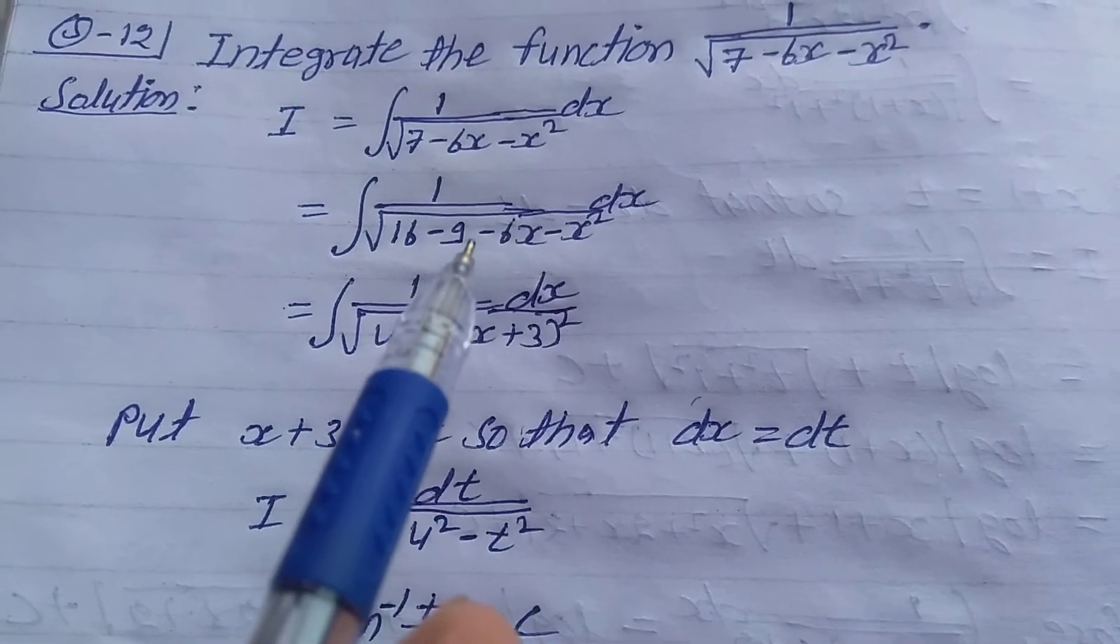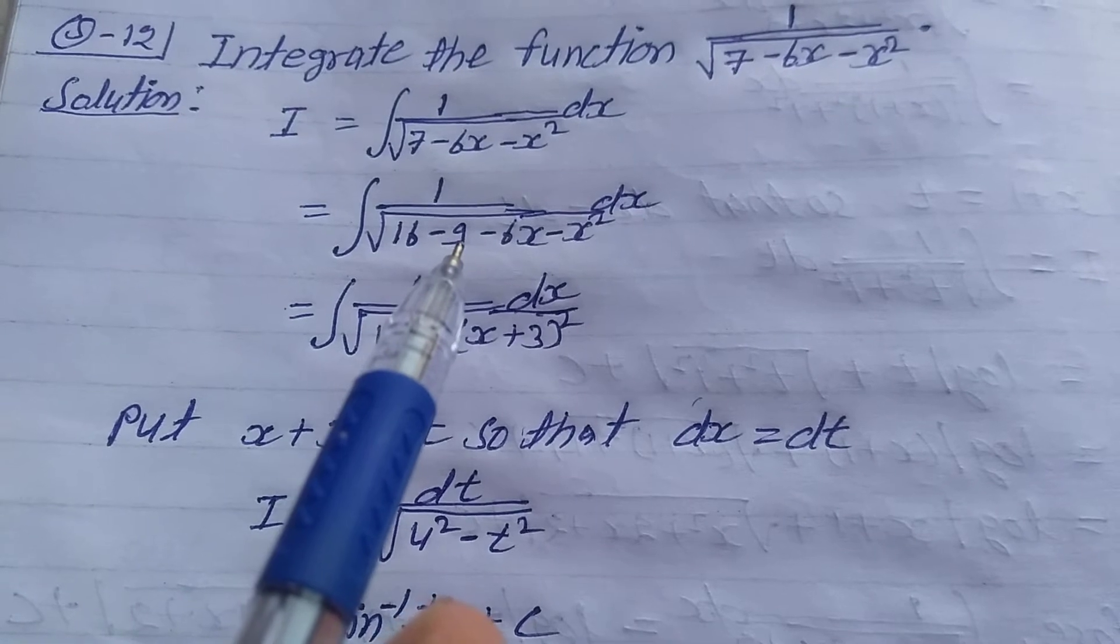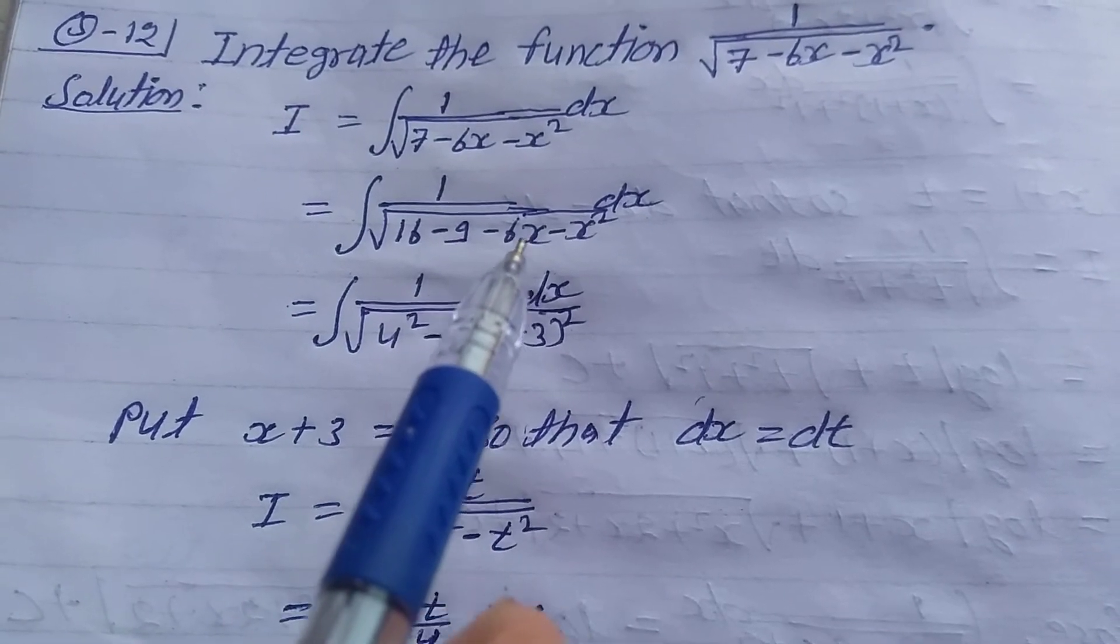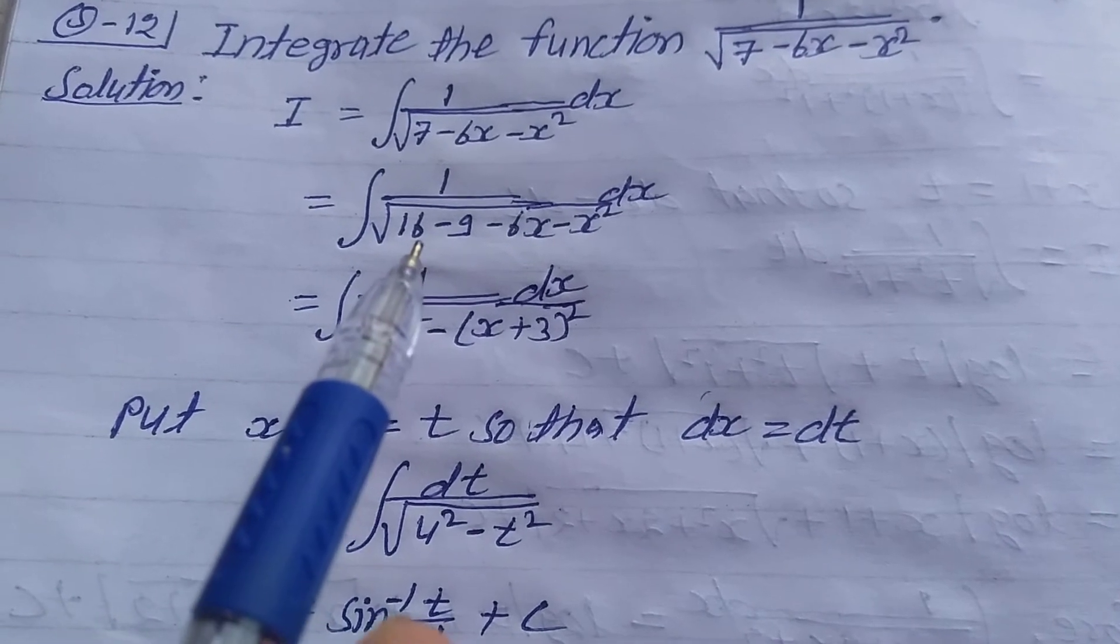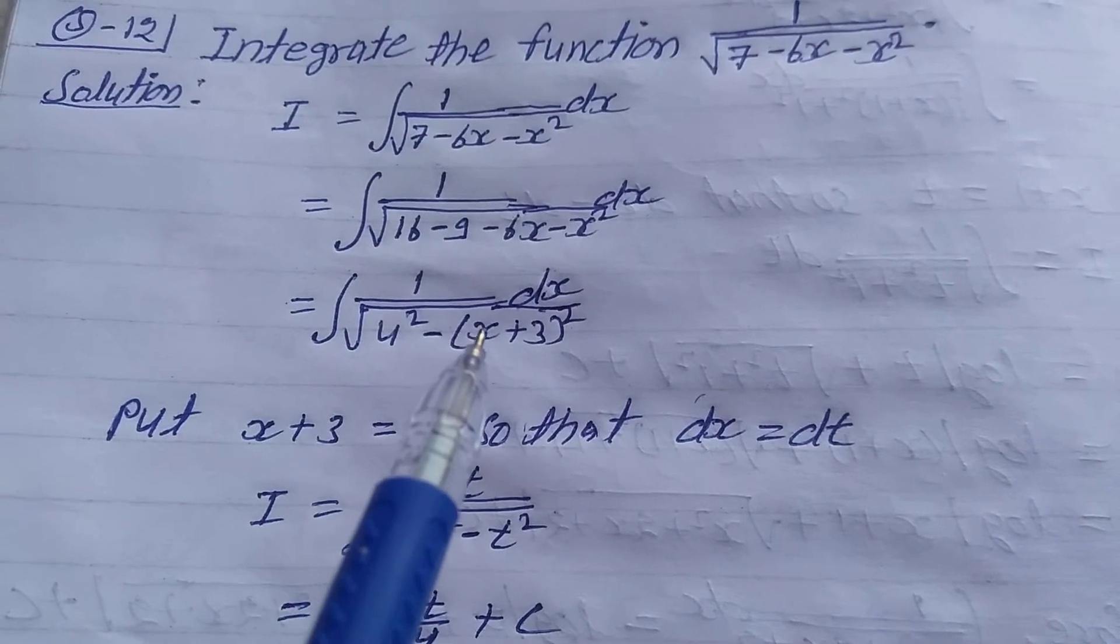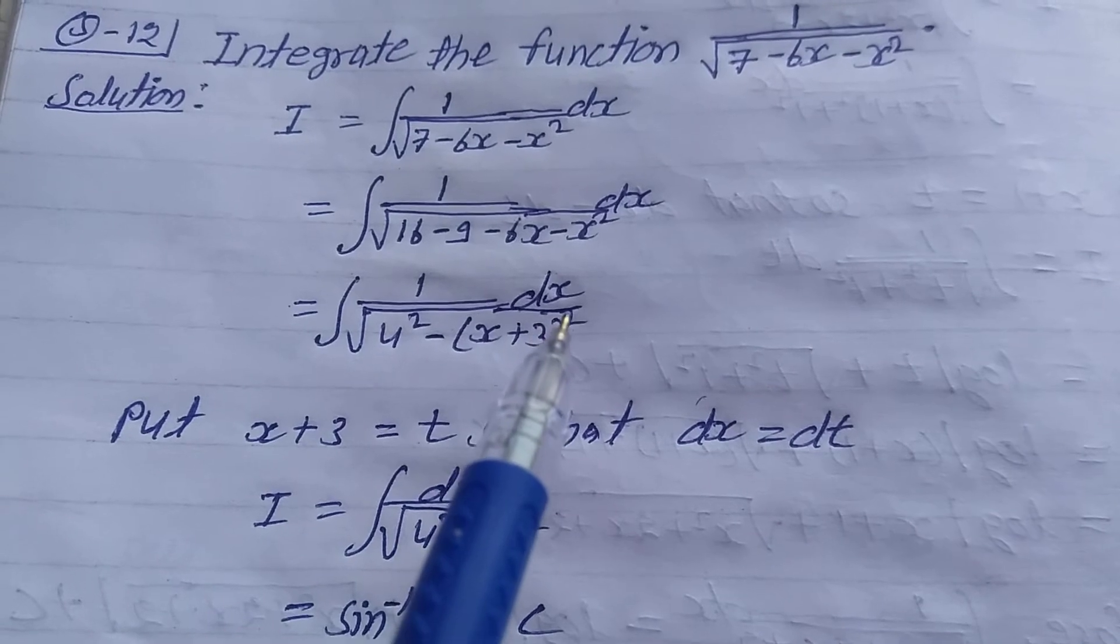In these three terms, take minus common and make x plus 3 whole square. So this is equal to integration 1 upon root of 16 is 4 square, minus bracket x plus 3 whole square dx.